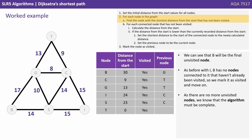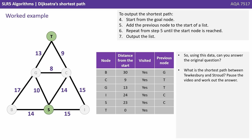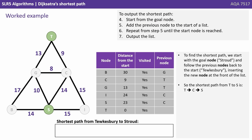Using this data, can you answer the original question — what is the shortest path between Tewkesbury and Stroud? To find the shortest path we start with the goal node, Stroud, and follow the previous nodes back to the start, Tewkesbury, inserting the new node at the front of the list. So the shortest path from Tewkesbury to Stroud is: Tewkesbury to Cheltenham to Stroud.